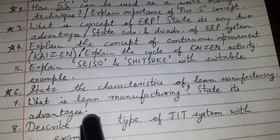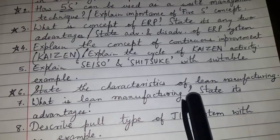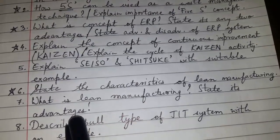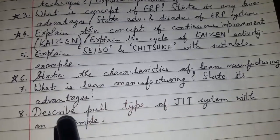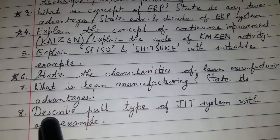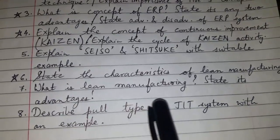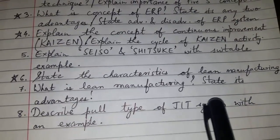State the characteristics of lean manufacturing — or it may be asked: what is lean manufacturing? State its advantages. Question number eight: describe the pull type of JIT system with an example.